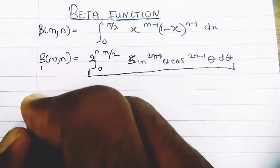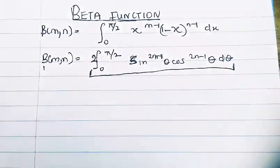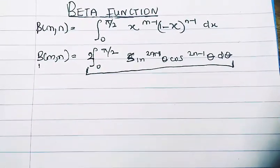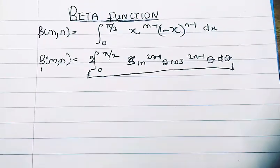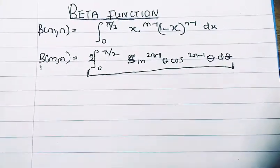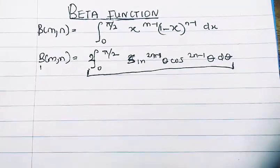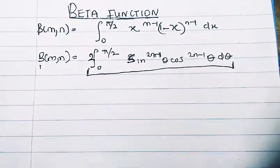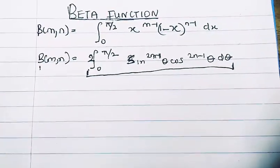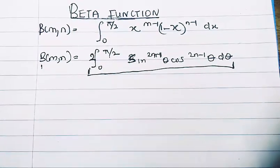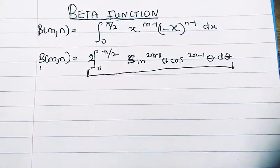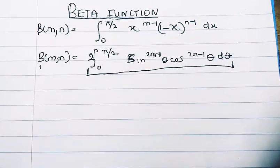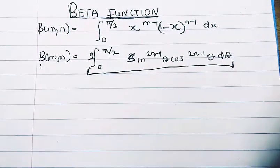Before we begin, there's what we call a reduction formula. A reduction formula is simply a formula for the integration of powers of sine and cosine that makes it easier for us to solve the problem.